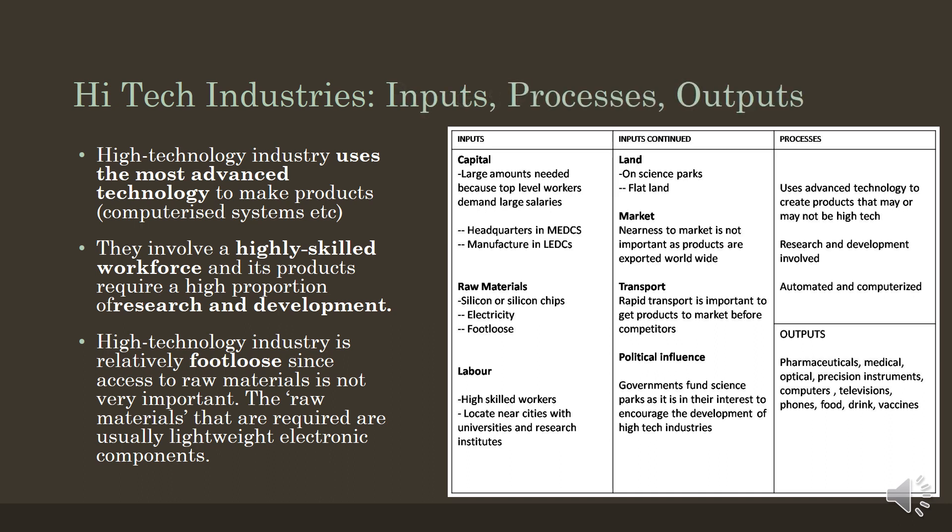Many high tech industries are divided into two sections. One: research and product development. Two: the manufacturing of the product, which normally involves the assembly of small, easily transported component parts.